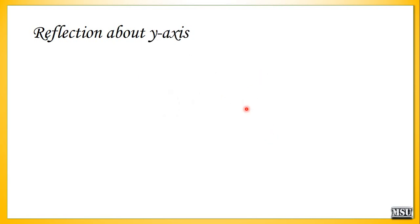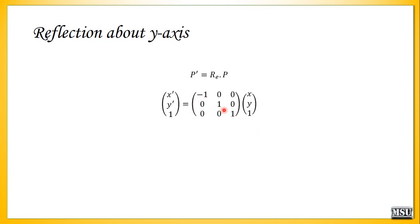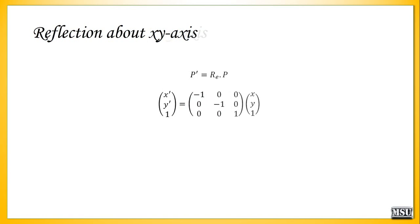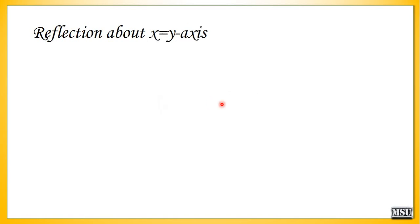Reflection about the y-axis means the object will be located at the fourth quadrant, so x' equals minus x and y' equals y. Reflection about the origin means both values are negative, so x' equals minus x and y' equals minus y. Reflection about the x equals y axis means the values are interchanged: p' equals r_e into p, where x' equals y and y' equals x.